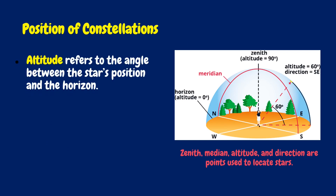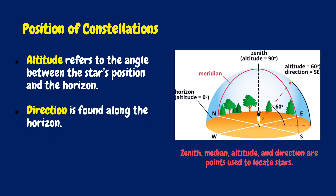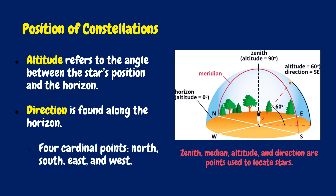Altitude refers to the angle between the star's position and the horizon. When the star is directly overhead at zenith, that angle is 90 degrees, while direction is found along the horizon. There are four cardinal points: north, south, east, and west.